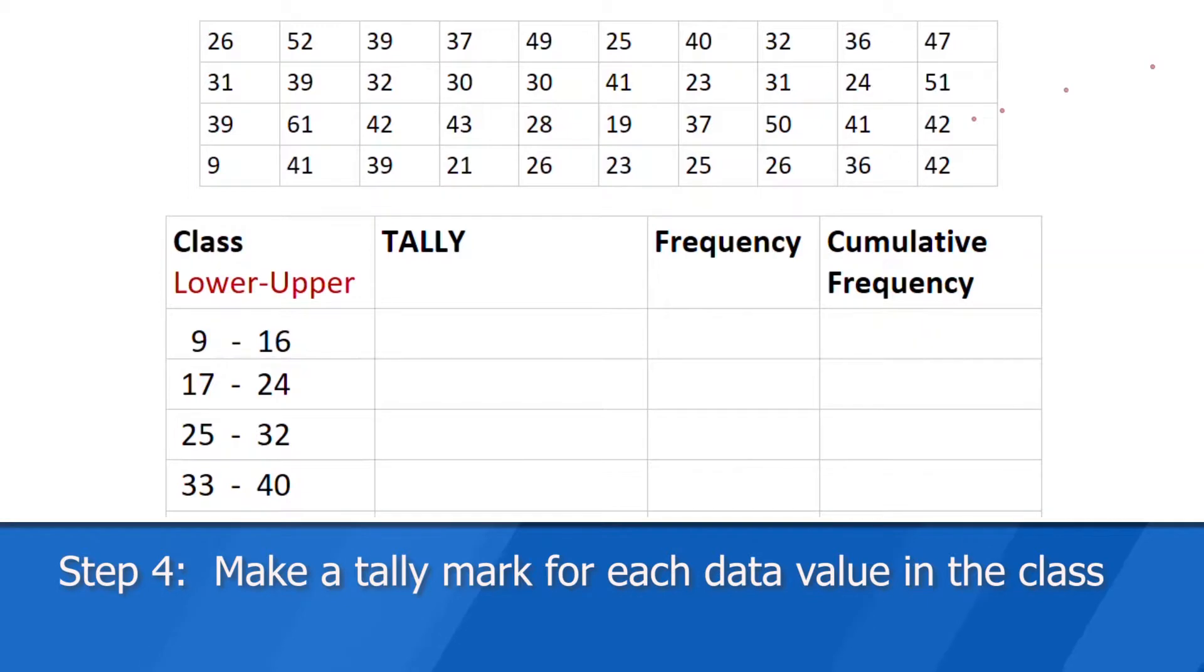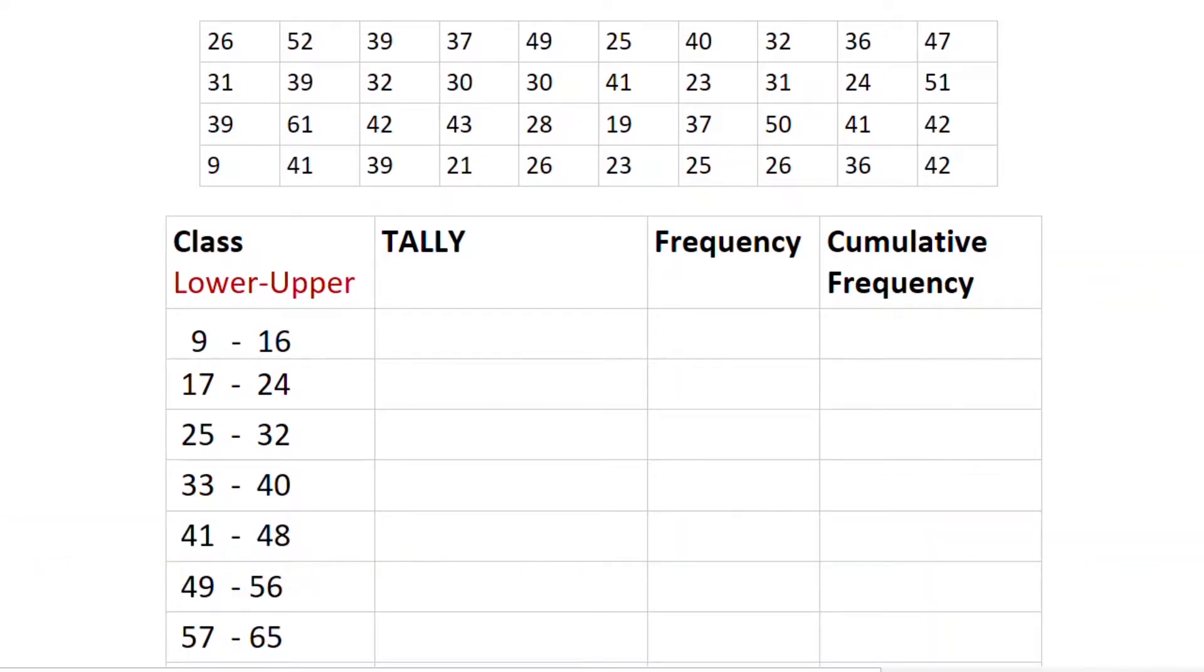First, we're going to make a tally mark and tally up all the different numbers. So we want to look and see all the values, data values between nine and 16. There's none in the first row and there's none in the second row. There's none in the third row, but there is one in the fourth row. And I'm just going to cross that one off. Now, next we want to look for values between 17 and 24. There's none in the first row, but I see here's 23 in the second row. So that's one tally. And here's 24. So there's another one. In the third row, we have 19. That certainly counts. So there's three so far. And in the fourth row, we have 21. So there's another one. 23. Okay. So there's a count of five right there. And that looks like everything in the class 17 to 24. Continue to do that and tally up everything for all of the classes.